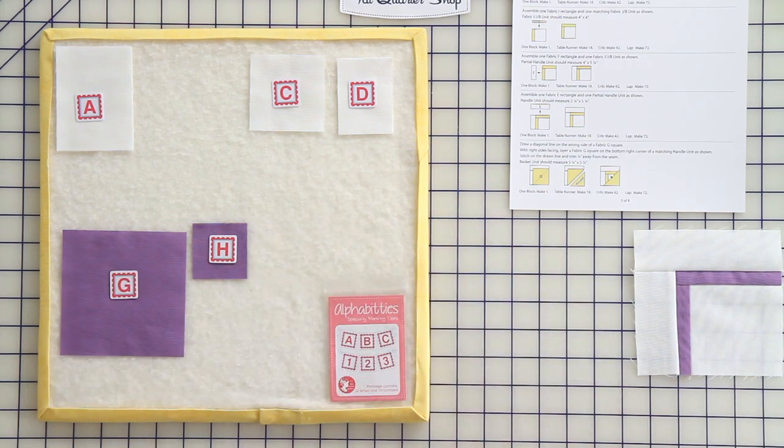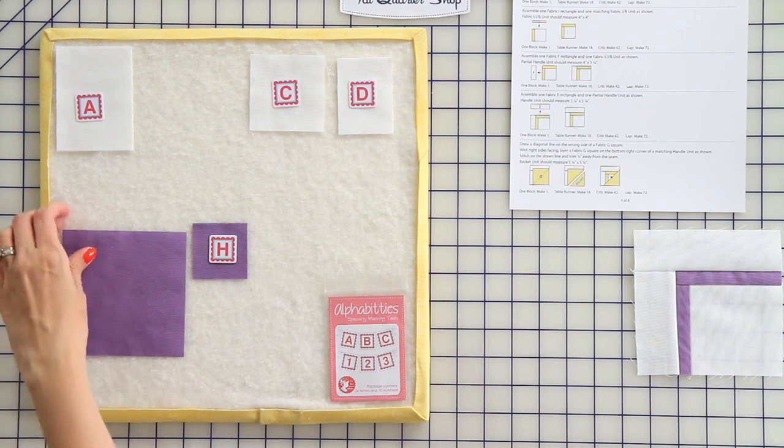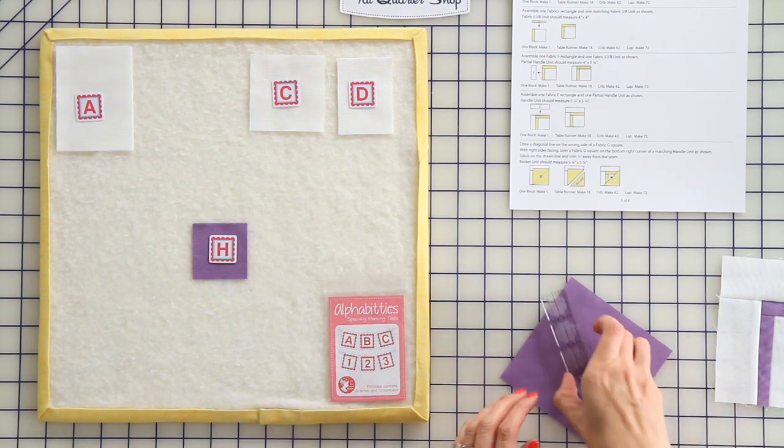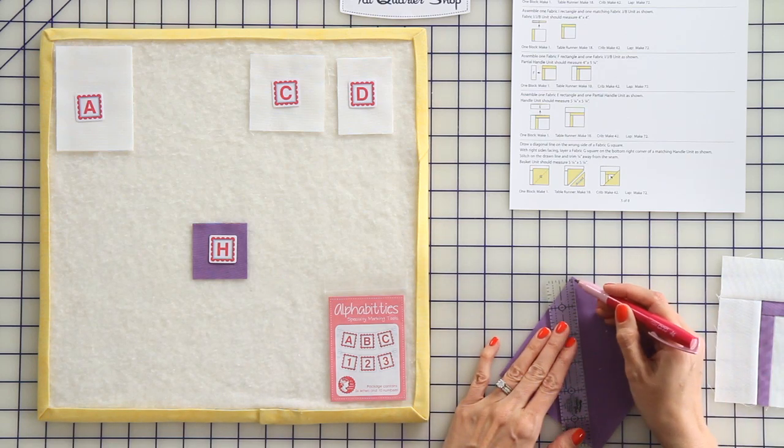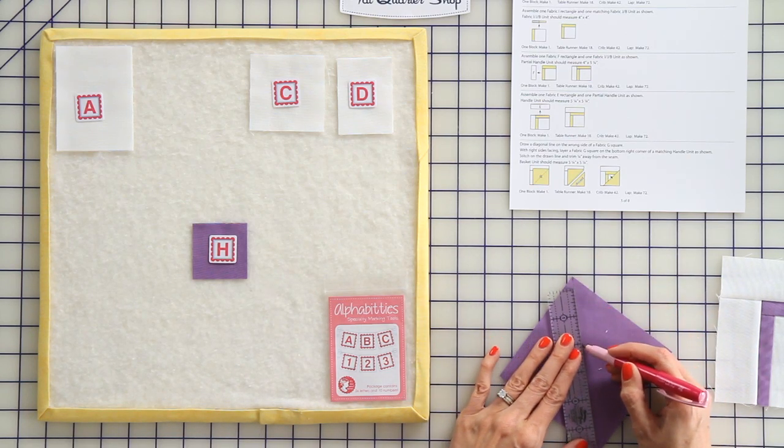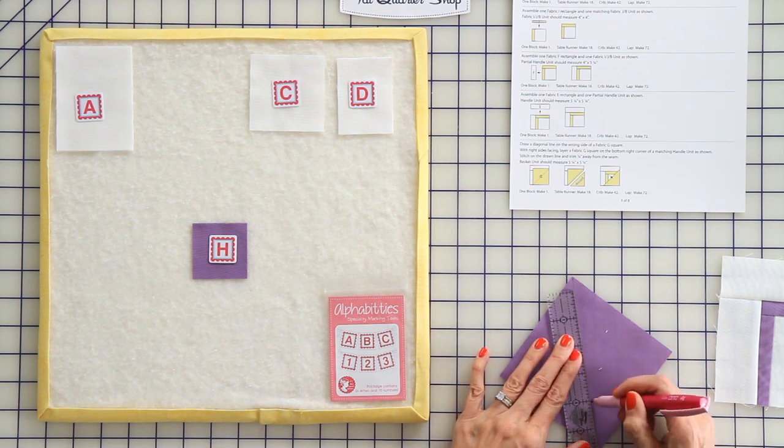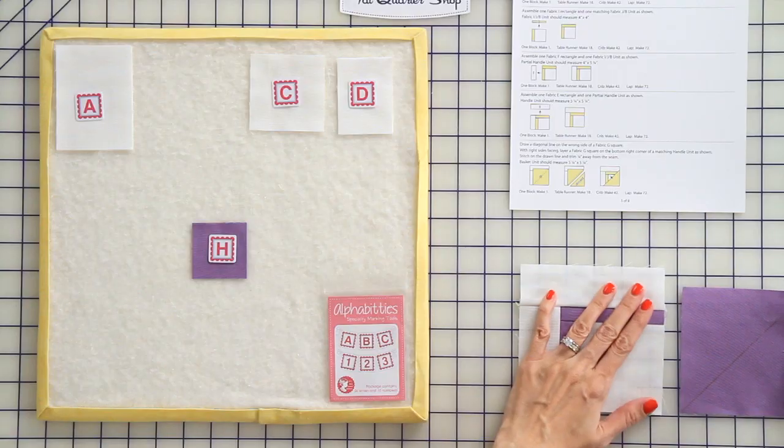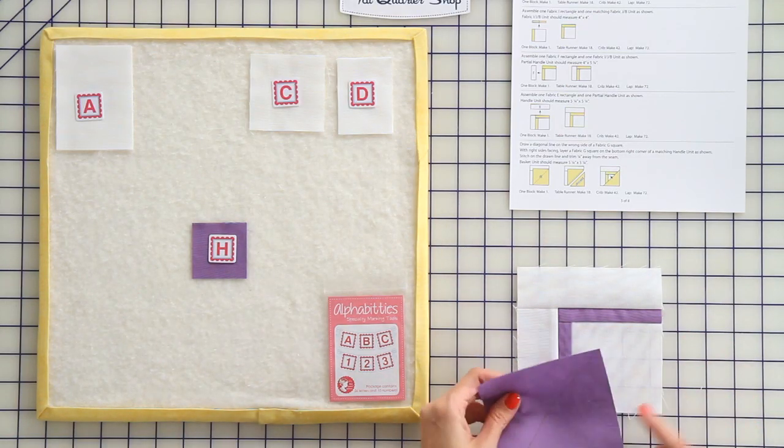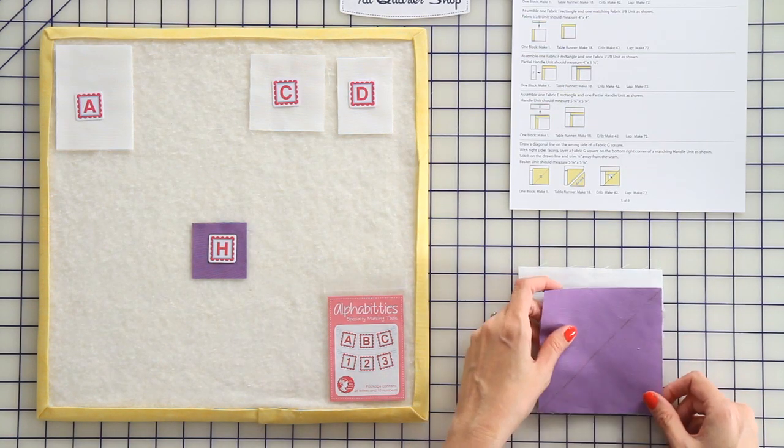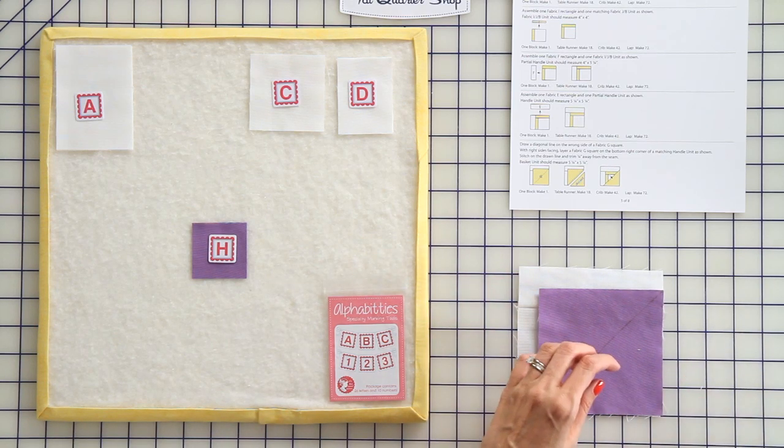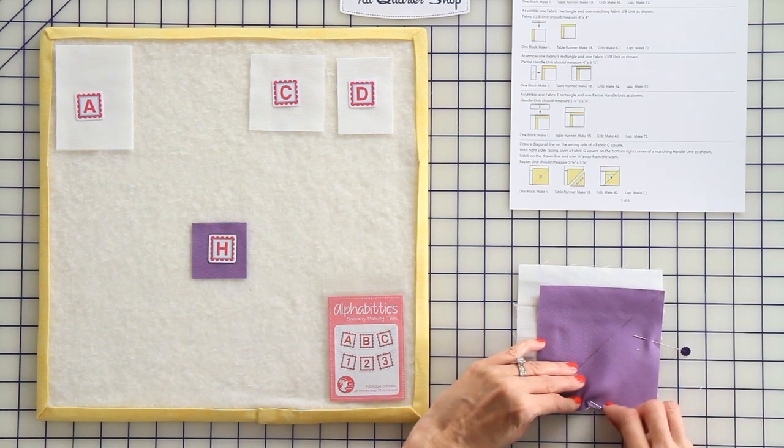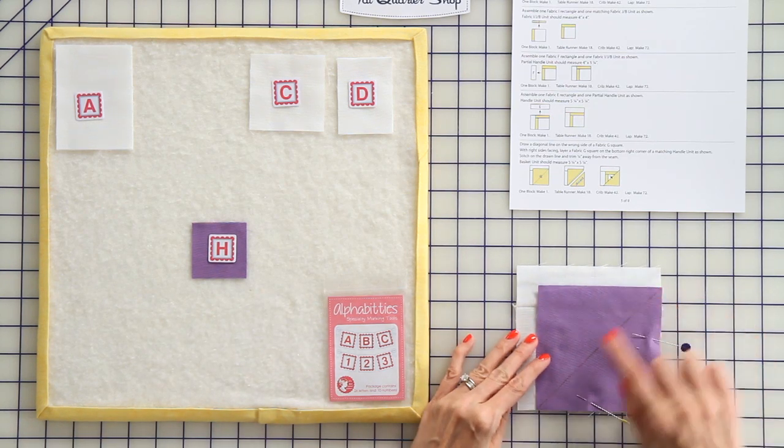From there, we're going to take our fabric G square, and we're going to draw on the wrong side. We're going to draw a line right in the center from tip to tip. We're going to put our square on the bottom right section, and we're going to pin in place. I'm going to use two pins, and then we're going to sew directly on the line from point to point.